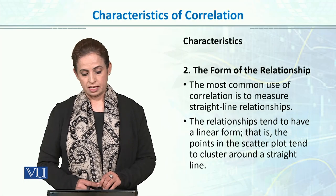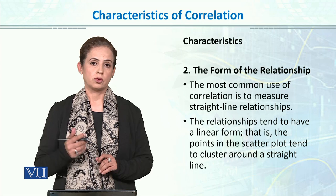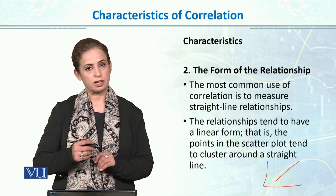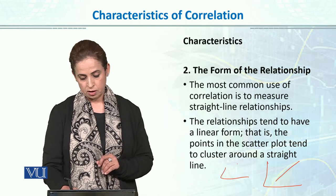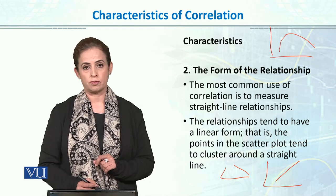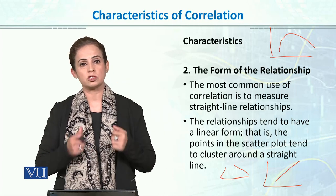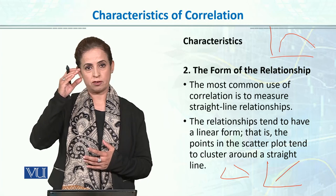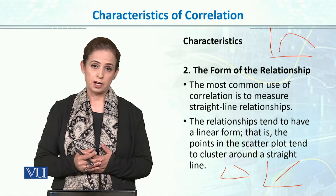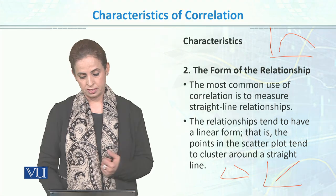The second characteristic of correlation is the form of the relationship. The most common use of correlation is to measure a straight-line relationship. In Pearson correlation, we talk about linear correlation — the relationship forms a line, either negative or positive. Correlation could also be curvilinear, meaning one variable increases and then goes down. For example, with age and running speed: as you grow, your running speed increases, but after age 40 or 50, age keeps increasing while running speed decreases. That's curvilinear correlation. The second characteristic is whether the relationship is linear or non-linear.